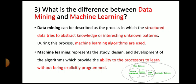Next, what is the difference between data mining and machine learning? The answer is, data mining can be described as the process in which the structured data tries to abstract the knowledge or interesting unknown pattern. During this process, machine learning algorithms are used. Machine learning represents the study, design, and development of algorithms which provide the ability to the processor to learn without being explicitly programmed. The artificial intelligence, machine learning, data mining, that is nothing but the domain of your data science and they are interrelated.